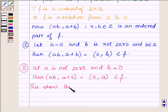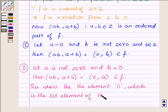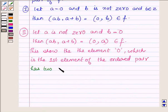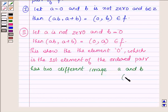This shows that the element 0, which is the first element of the ordered pair, has two different images a and b for a not equal to b, and therefore f is not a function.